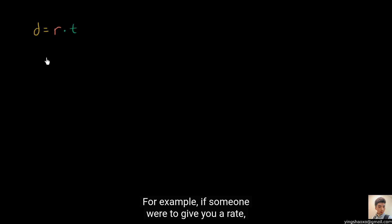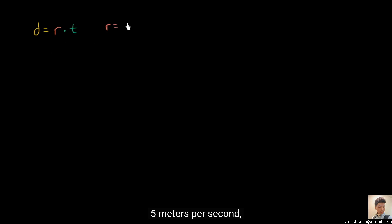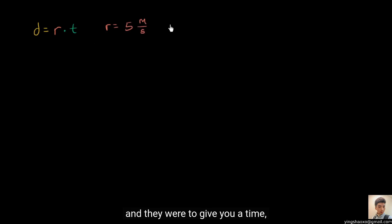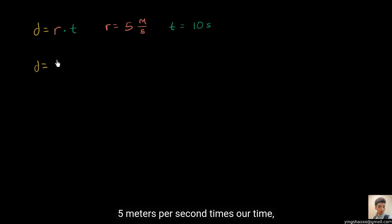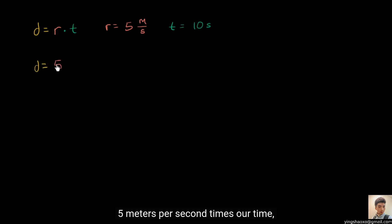So for example, if someone were to give you a rate of five meters per second, and they were to give you a time of 10 seconds, then we can in a pretty straightforward way apply this formula. We'd say distance is equal to our rate, five meters per second, times our time, which is 10 seconds.